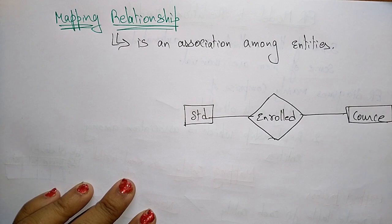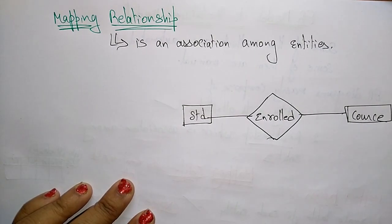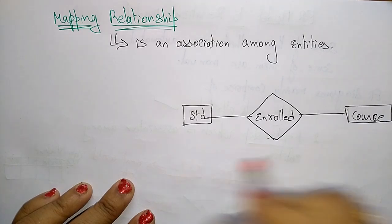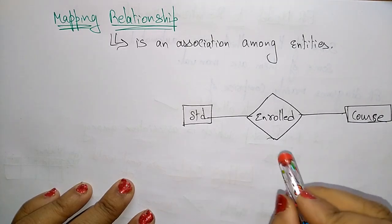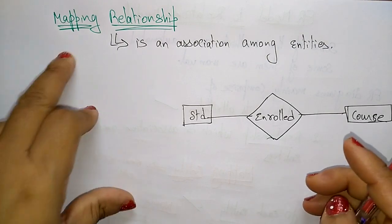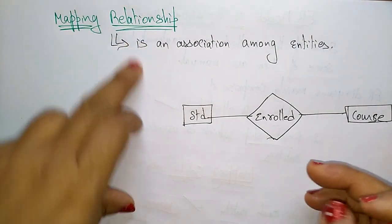Here, a student is an entity and the course is an entity. The relationship between the student and the course is 'enrolled'. So, we are discussing about the mapping relationships.